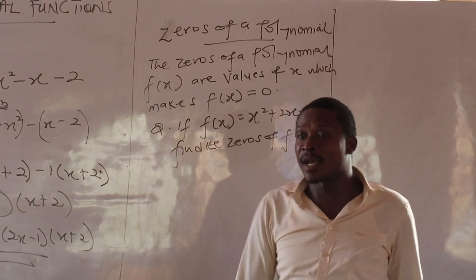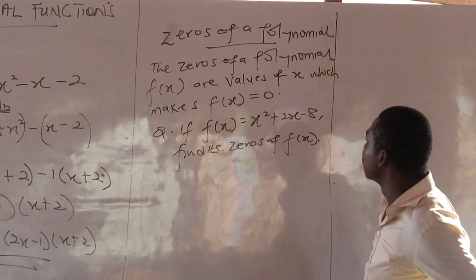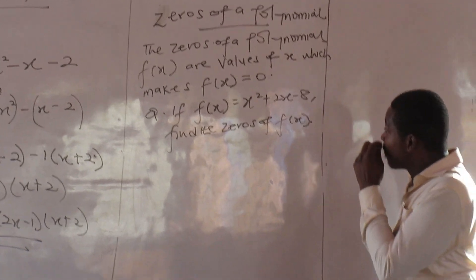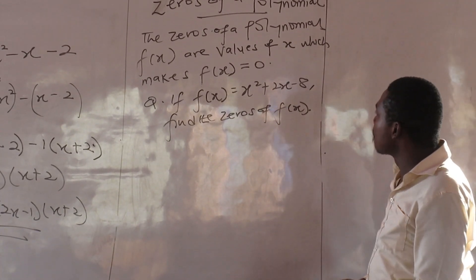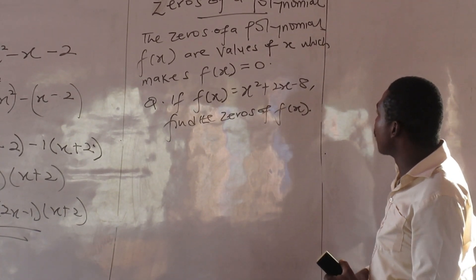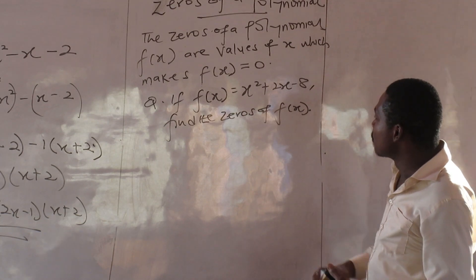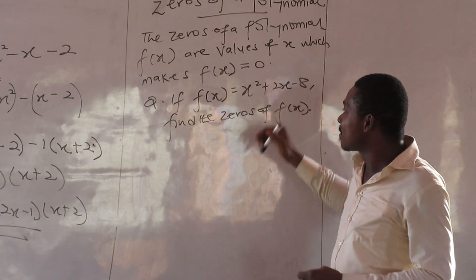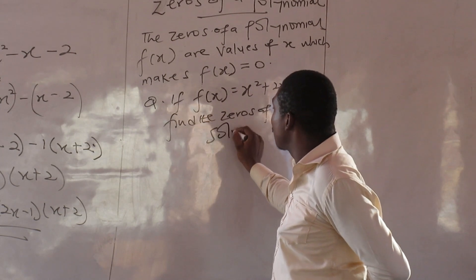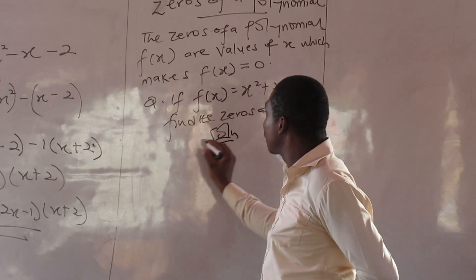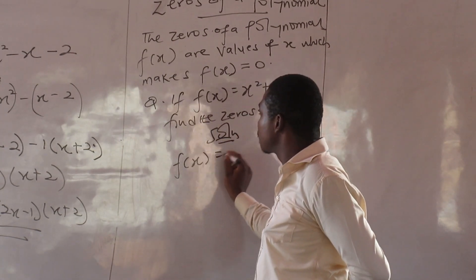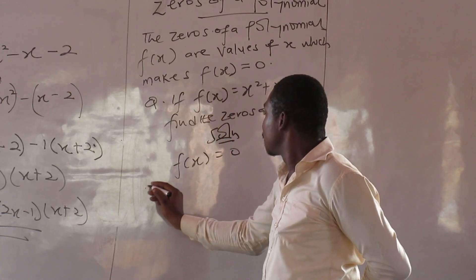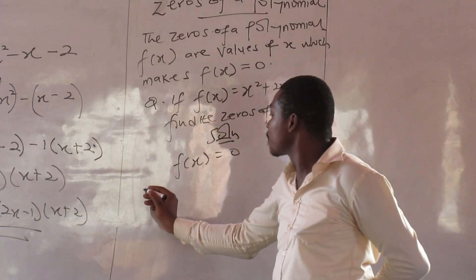The zeros of a polynomial f(x) are values of x which make f(x) equal to zero. So if you ask me to find the zeros, I have to equate the whole function to zero.